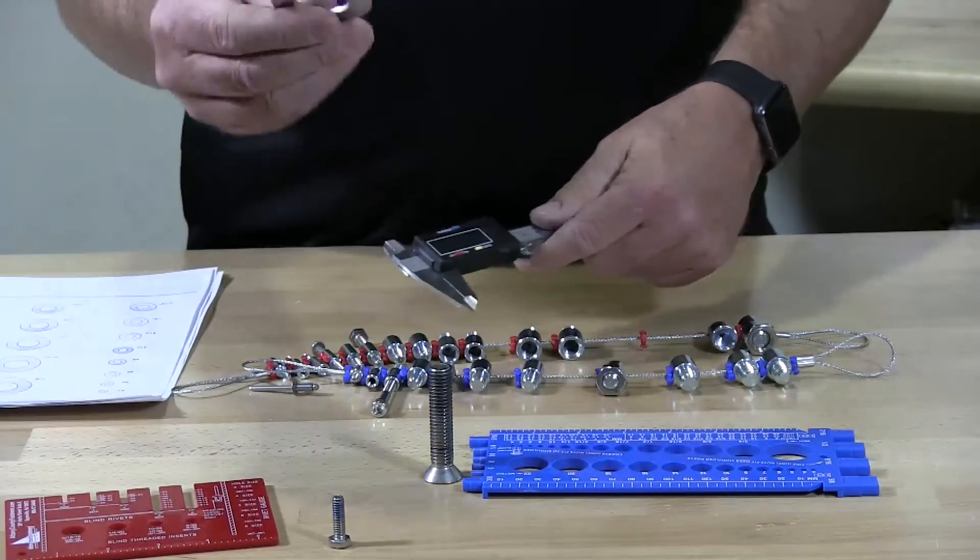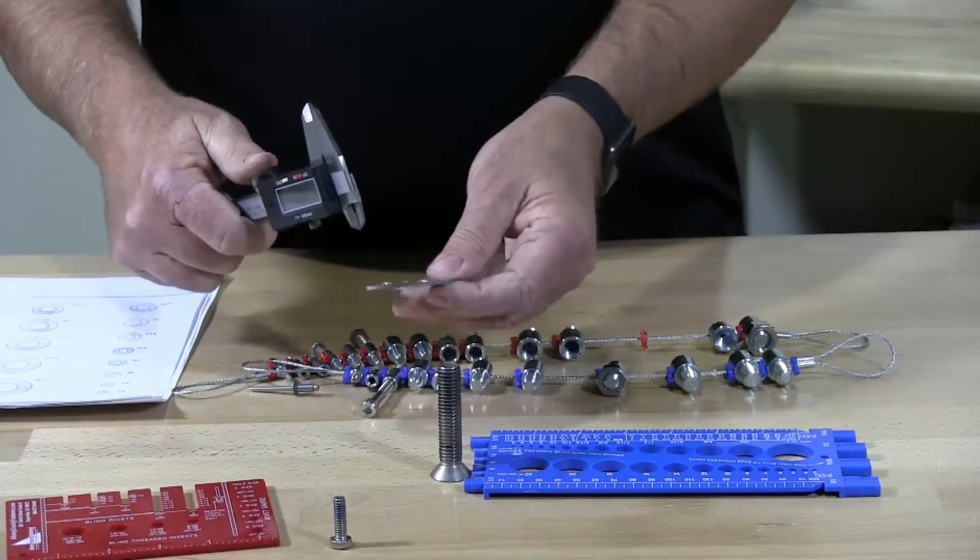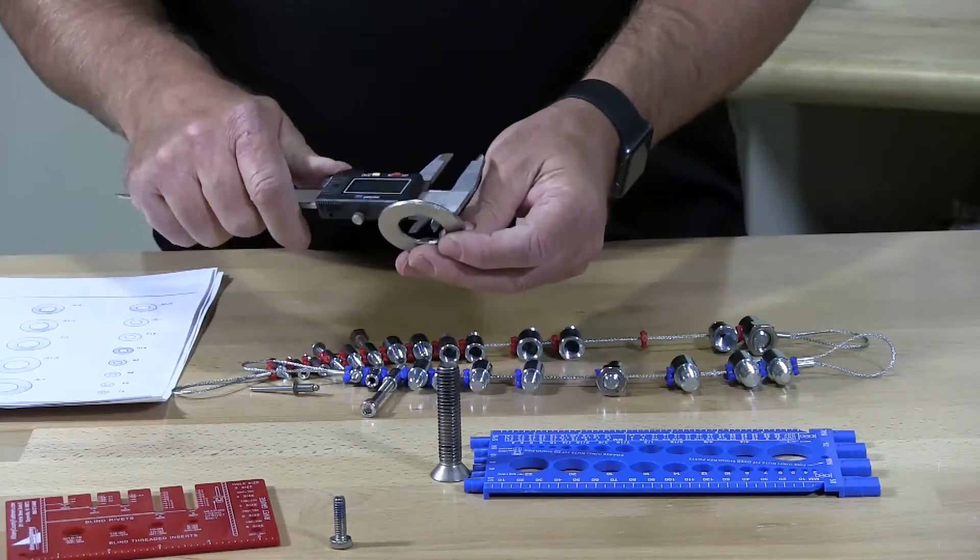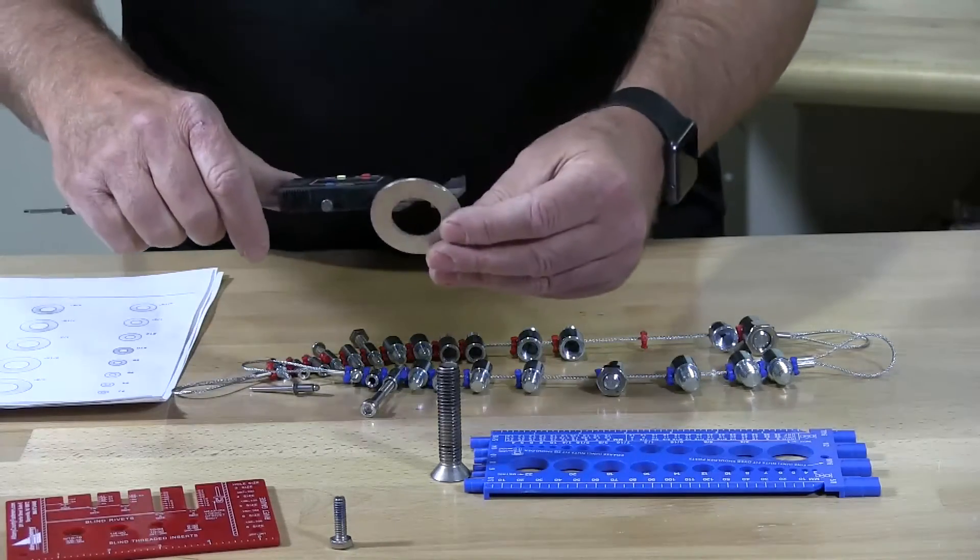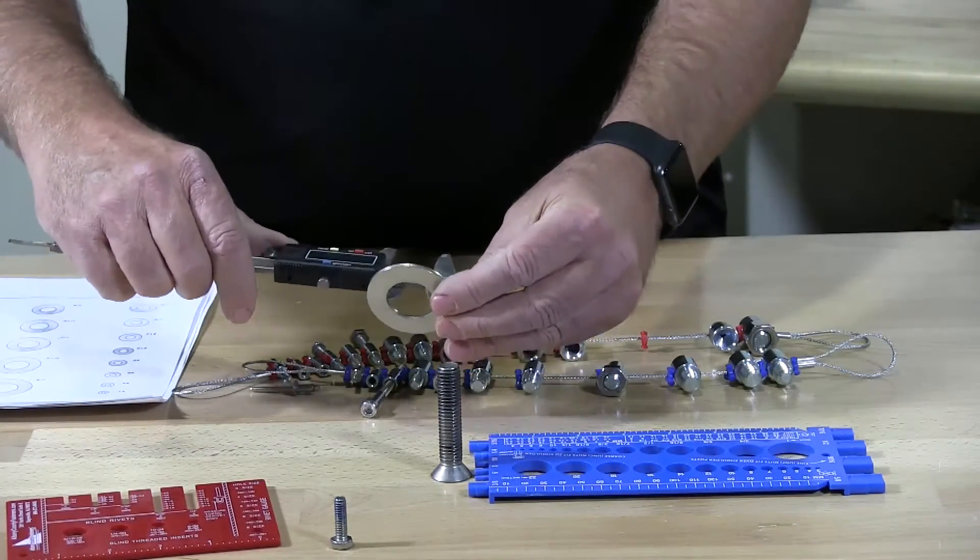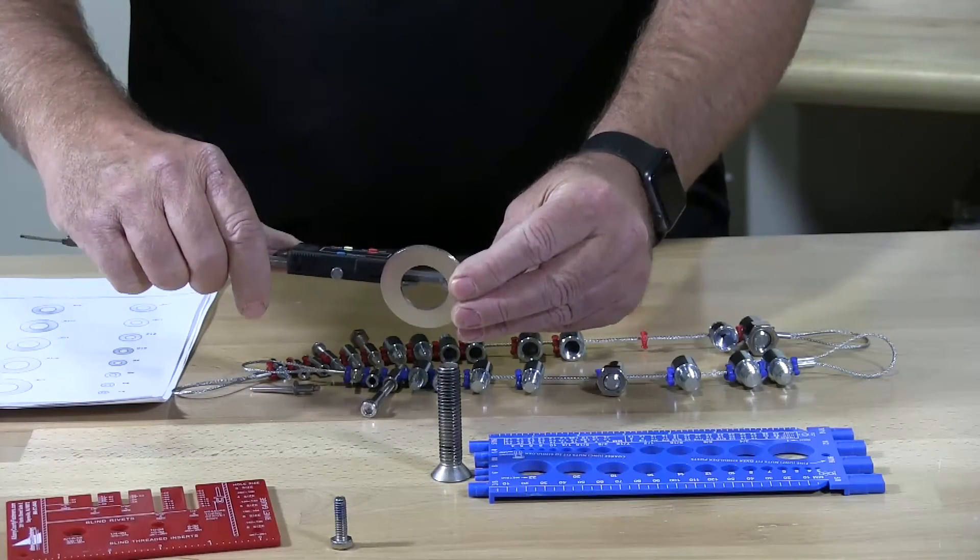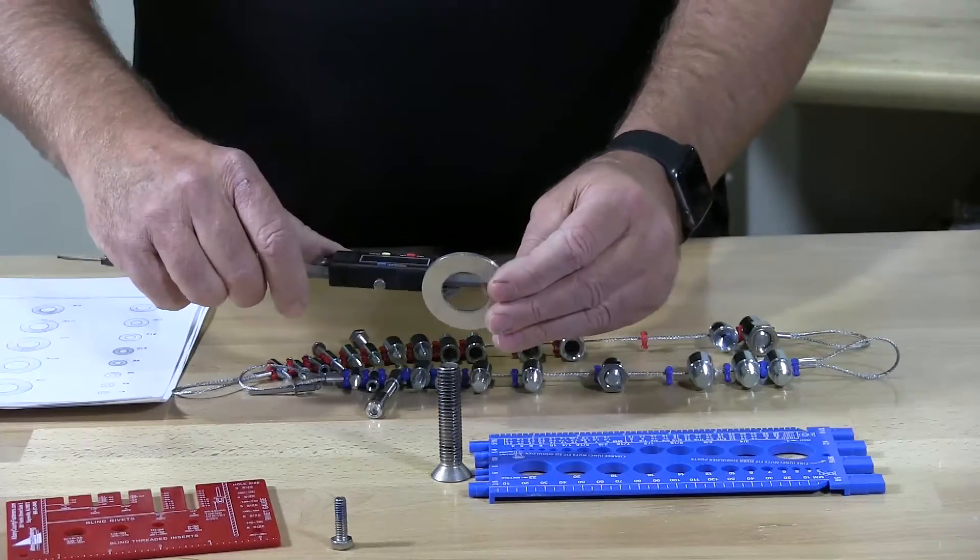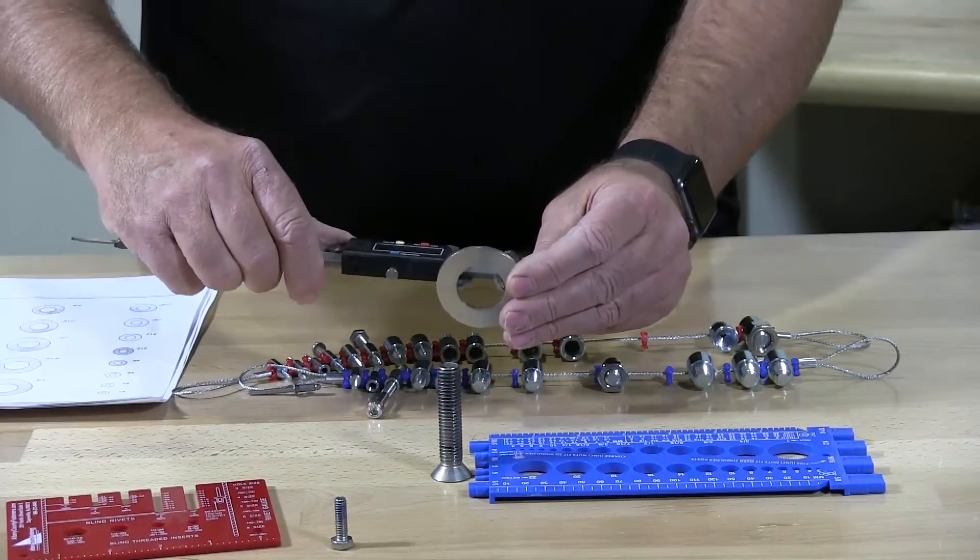So if I wanted to measure this flat washer, the inside, which I know that this is one inch I believe, so it should be more than one inch, so a one inch bolt can fit in that. These two prongs on the outside measure inside circumference, or inside diameter, and this measures out as 1.062. And now it just went to one point because I pulled it out.